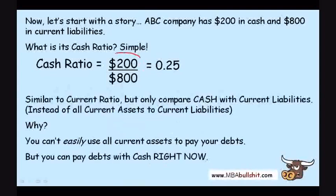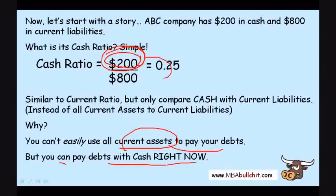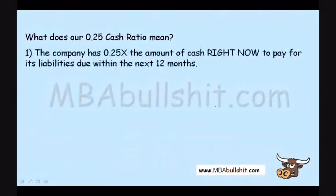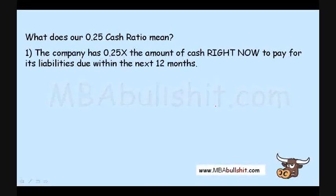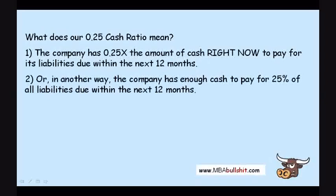You cannot easily use all current assets to pay for your debts right now, but you can pay your debts with cash right now. So you can use this cash right now to pay all of these current debts. Our 0.25 cash ratio means the company has 25% the amount of cash right now to pay for its liabilities due within the next 12 months. Liabilities due within the next 12 months are called current liabilities.